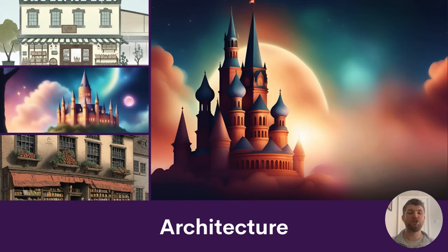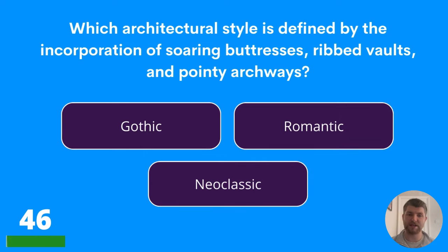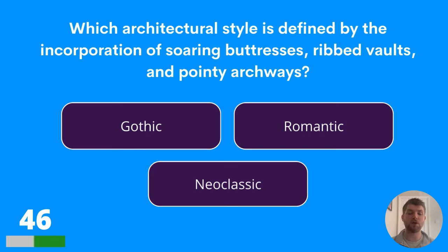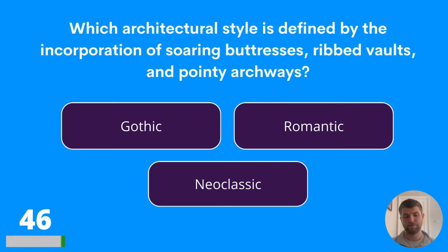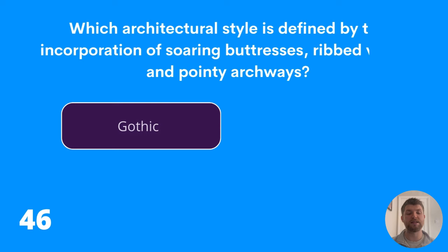We're moving on now to our questions about architecture. Starting with question forty-six: which architectural style is defined by the incorporation of soaring buttresses, ribbed vaults and pointy archways? Gothic, Romantic, or Neoclassic? The answer is Gothic.